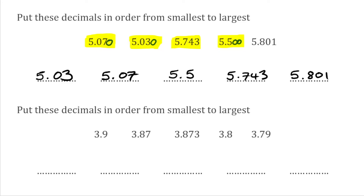For this final question we're going to do exactly the same thing. The most decimal places is 3, so we write 3.900, 3.870, 3.873, 3.800 and 3.790. Comparing the first digit — that's 3 for all of them — so we move to the second digit. We've got 9, 8, 8, 8 and 7. So it's going to be the 7, which is 3.790 — we write 3.79.